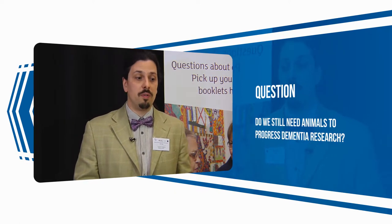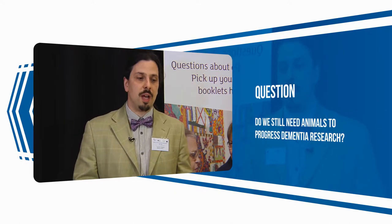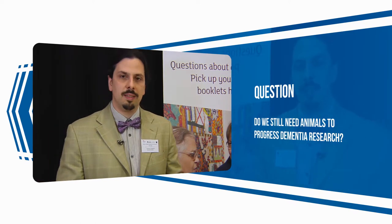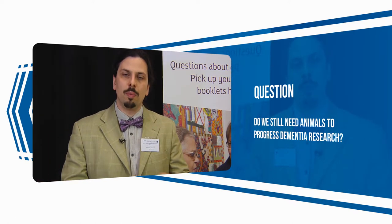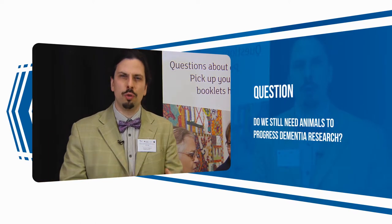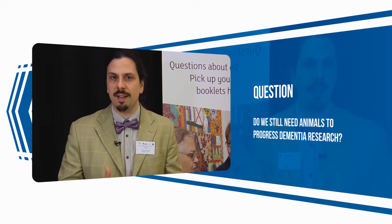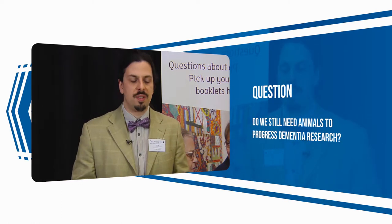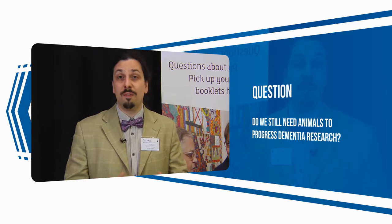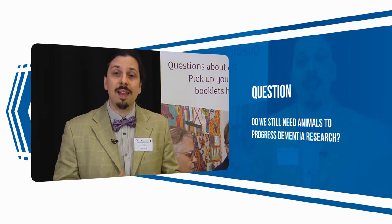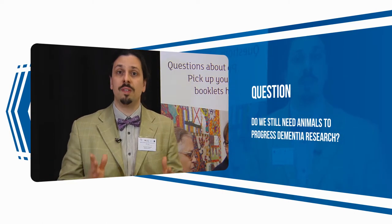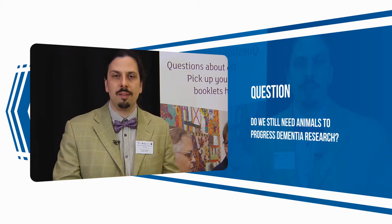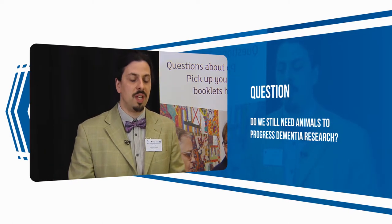Some other animal models overexpress a mutated form of a protein called tau protein that can get modified and form those neurofibrillary tangles that are found in the brain of people with Alzheimer's disease. The advantage of these models is that they allow us to study in a short timeframe the alterations associated with the accumulation of these proteins.